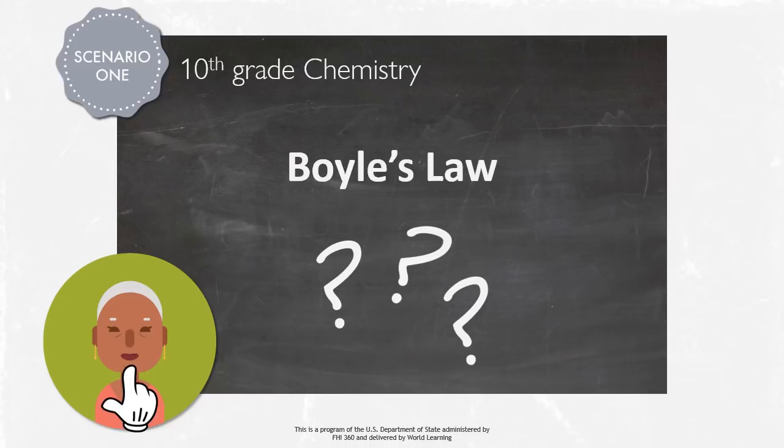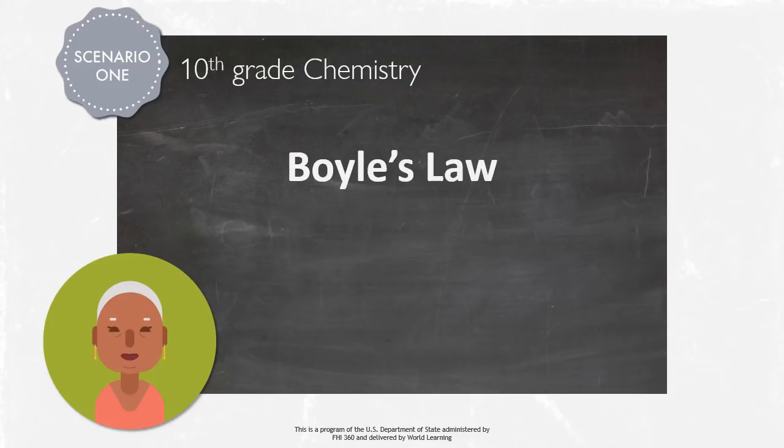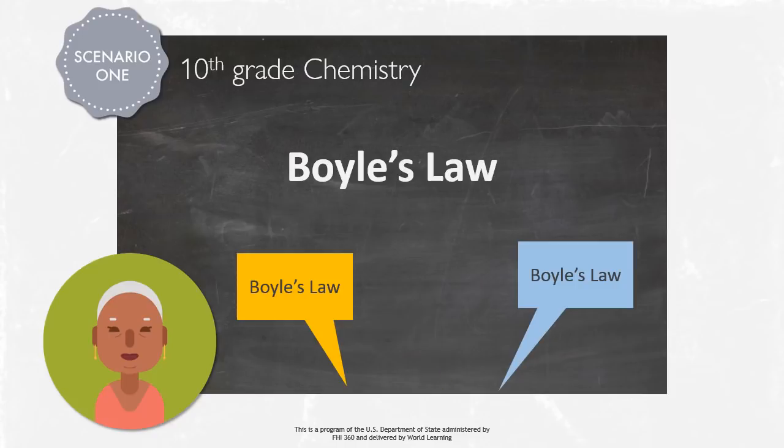Veronica modeled the pronunciation of Boyle's Law, making efforts to exaggerate how she moved her mouth to pronounce the different sounds. Then, she invited the whole class to repeat after her in chorus. After a couple of repetitions, she called on a few students to pronounce Boyle's Law individually.